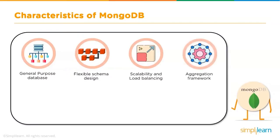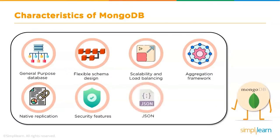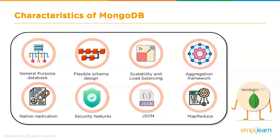MongoDB also offers an aggregation framework — an extract, transform, and load framework that eliminates the need for complex data pipelines. Native replication means data gets replicated across a replica set without complicated setup. Security features include both authentication and authorization. JSON is widely used across the web for front-end and API communication, and MongoDB is compatible with the same protocol. Lastly, MongoDB uses MapReduce, an excellent tool to build data pipelines.